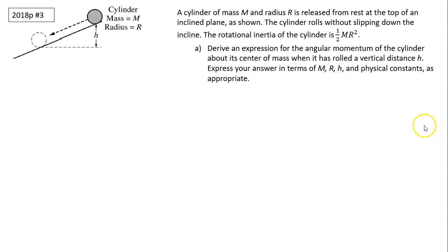So angular momentum is L equals I omega. We know I is one-half mr squared. To find omega, we have to use conservation of energy. The potential energy at this point, mgh, should be equal to energy at this point, which is kinetic energy. Kinetic energy has two parts, rotational and translational. So mgh equals one-half mv squared plus one-half I omega squared.